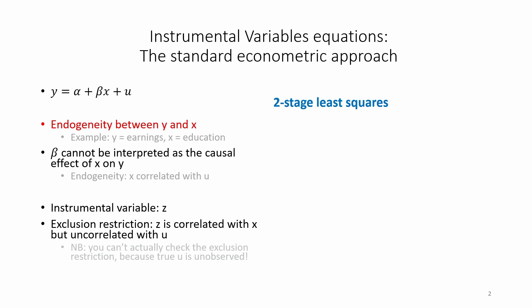Instrumental variables regression can be estimated using a technique called two-stage least squares. In the first stage you regress x on z. The coefficient delta should be large and statistically significant. The f statistic should also be large, greater than 10, according to a popular rule of thumb.